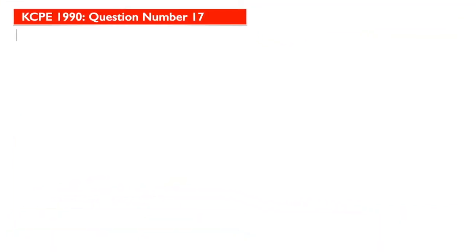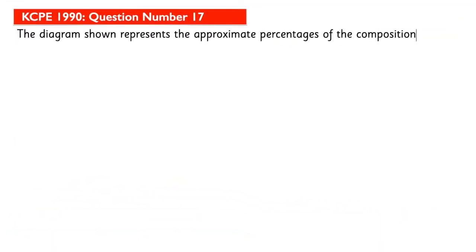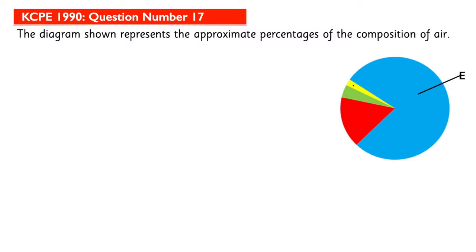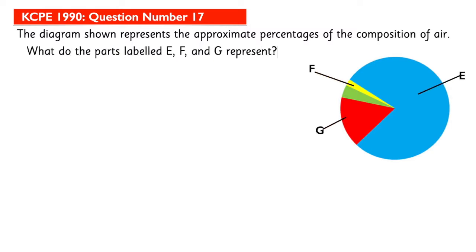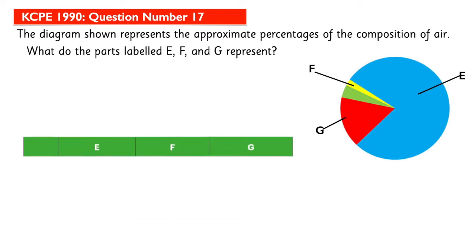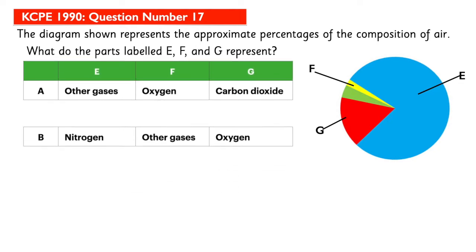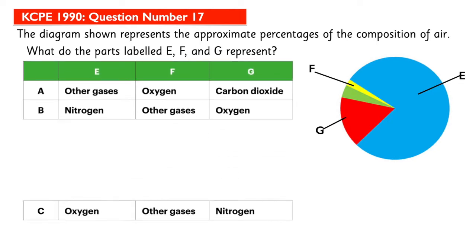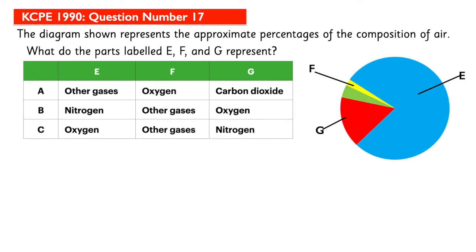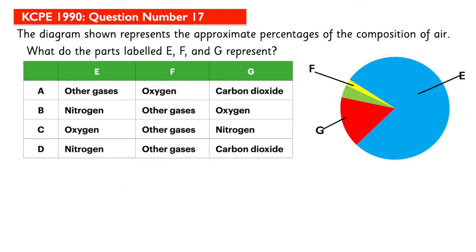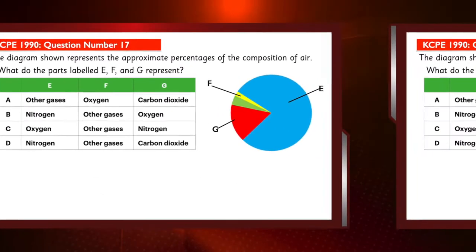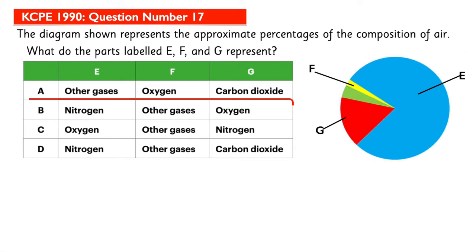The diagram shown represents the approximate percentages of the composition of air. What do the parts labeled E, F, and G represent? The answer is B.